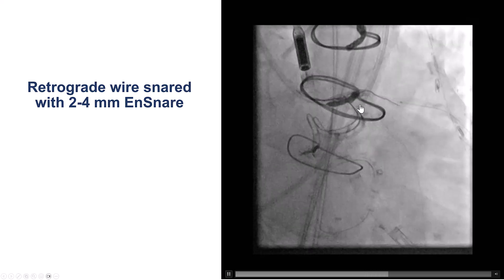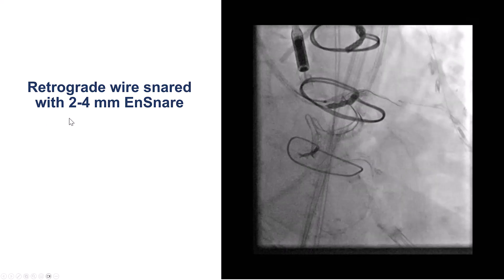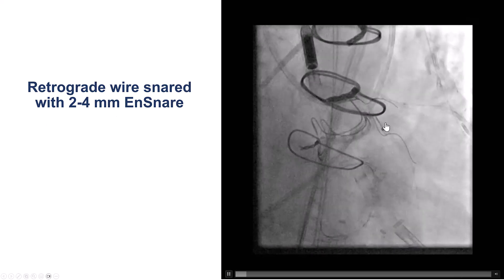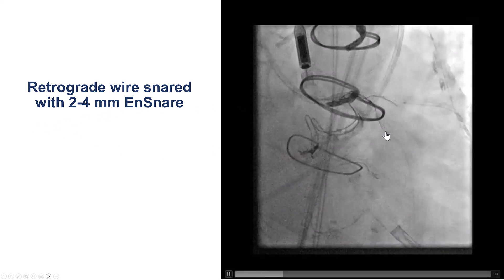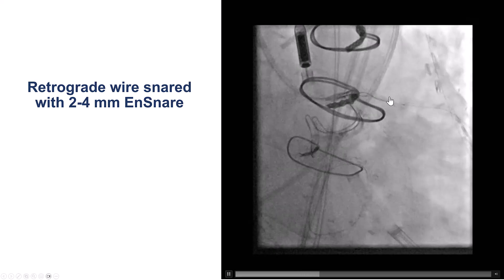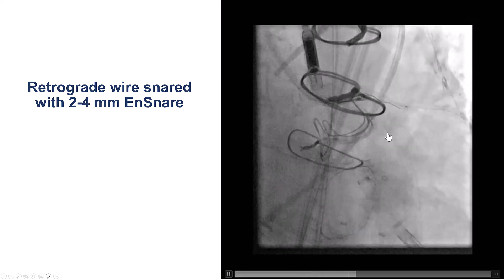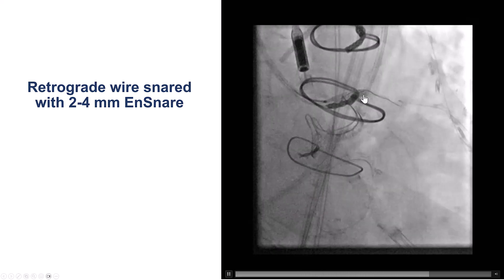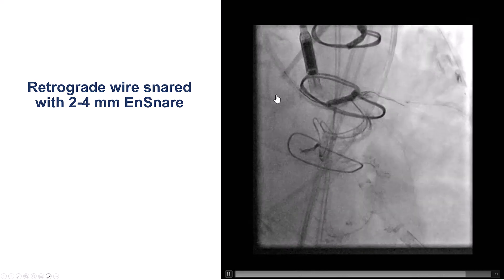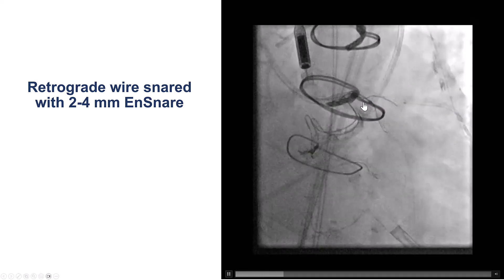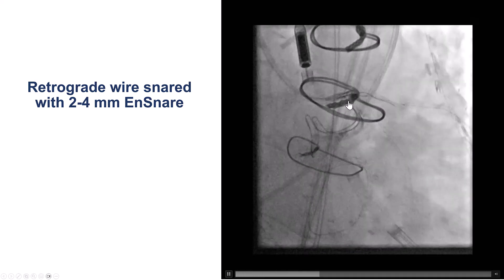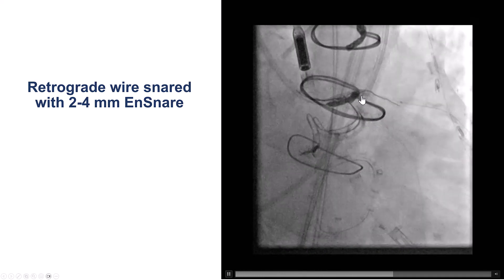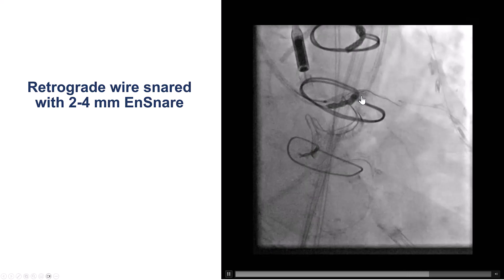We advanced a 2 by 4 millimeter ensnare into the circumflex. We then advanced the retrograde wire into it, closed the snare, pulled the wire back, and now we have the retrograde wire inside the antegrade guide catheter.